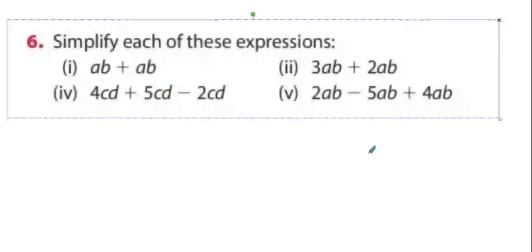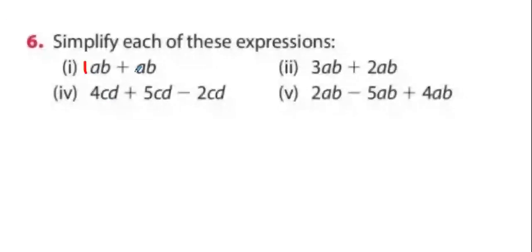Now, question six. It's exactly the same stuff, except there's two letters. What's one AB plus another one AB? Two AB's. What's three AB's plus two AB's? Five AB's. Four CD's plus five CD's take away two CD's. Seven CD's.